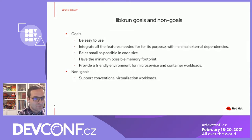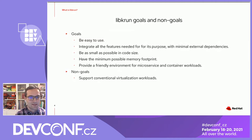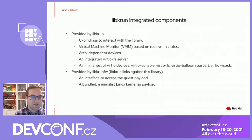Provided by LibKRun firmware, we have an interface to access the guest payload — which is the data that is going to be injected inside the guest memory — and a bundled minimal Linux kernel as a payload. It's very likely that in the near future, LibKRun firmware will also include some kind of minimal firmware, possibly written in Rust, that is needed to be able to run memory-encrypted VMs.